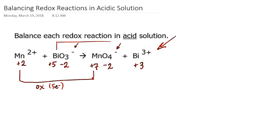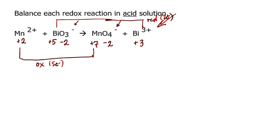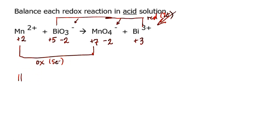Looking at bismuth, it's also changing oxidation state — going from +5 to +3. Since it's getting less positive, it must be gaining electrons, so that must be a reduction process involving a gain of 2 electrons. To balance this equation overall, I'm going to write out the half-reactions: one smaller equation representing the oxidation process and another representing the reduction process. After balancing each of those, I'll add both processes together to get the overall redox reaction equation.